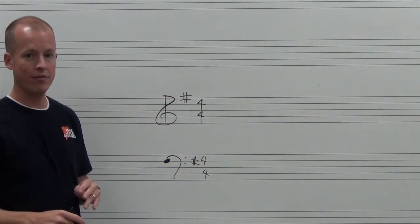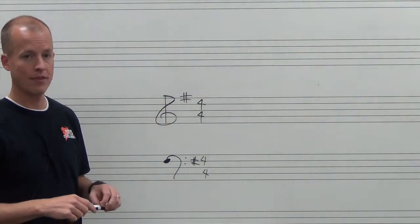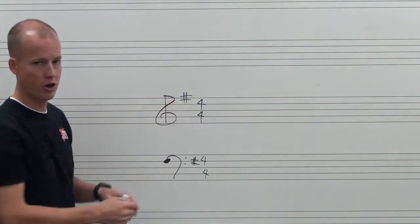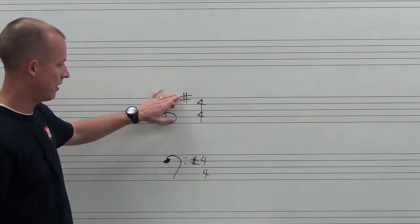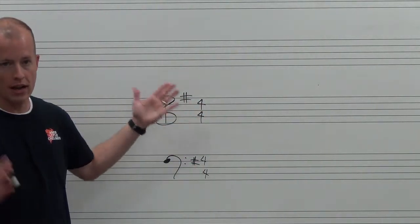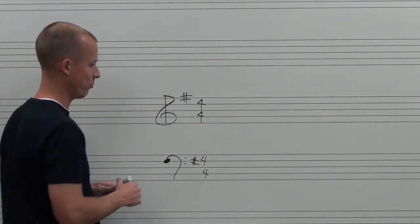This tells us that all F's are sharp. Everything else will be natural. So all the F's will be sharp. Everything else will be natural. So the F's up here as well as here. The F's here as well as low. Any F is going to be sharp. Everything else will be natural.